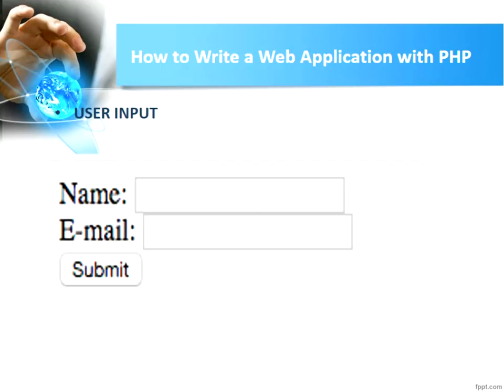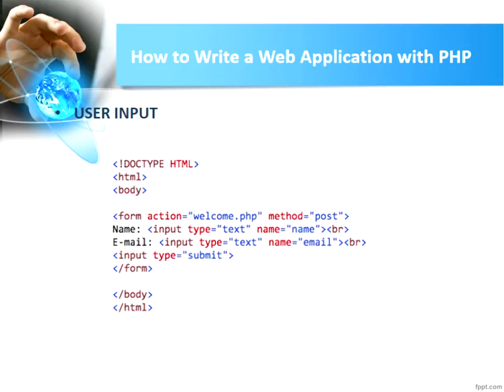Let's move to another example. Here we have an HTML form. The code uses the HTML5 doctype: just 'DOCTYPE html'. Inside we have HTML, body, a form with action and method attributes, input fields for name and email, and closing tags.